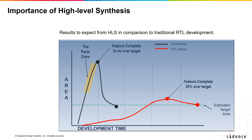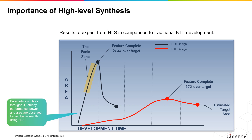In traditional RTL design, the process is more iterative. With Stratus HLS, the area, latency, and power targets converge substantially faster.